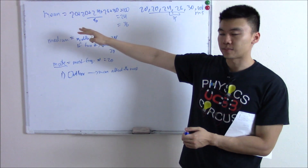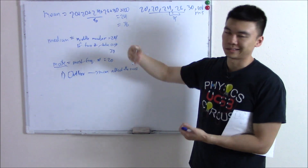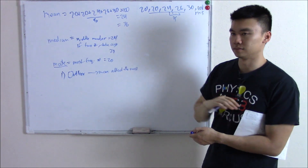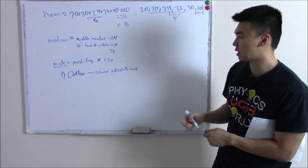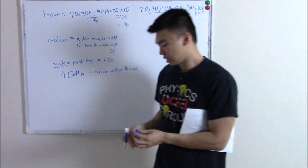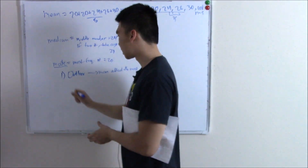Mean is affected the most by outliers. Median changed a little bit. Mode didn't change at all — mode is usually the least affected. That's your first special circumstance.